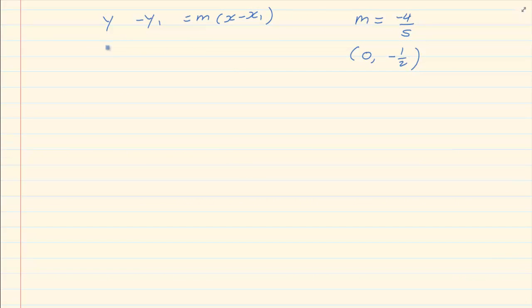Now substitute what we have. So we have y minus minus a half which will give us plus half is equal to m which is minus 4 over 5. So the equation of the perpendicular bisector is minus 4 over 5x minus a half. Thank you for watching.